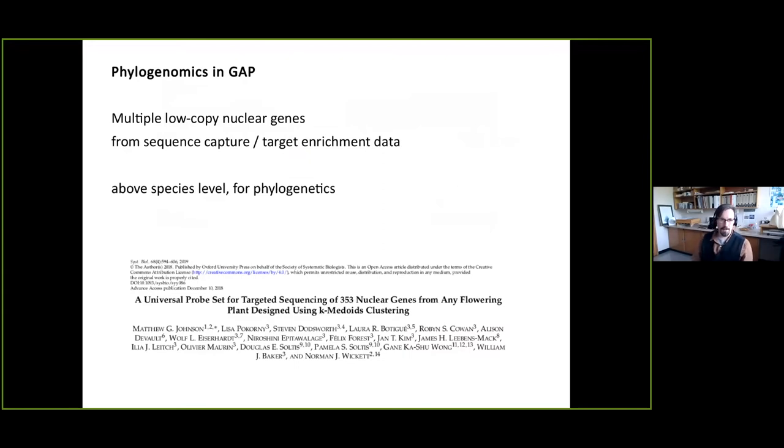The premise here is that either in GAP or in other projects, we are now dealing with large numbers of low copy nuclear genes. In the case of the Australian angiosperm tree of life produced with sequence capture, also known as target enrichment. And the premise is also that we have got sampling with fairly one per genus or one per species coverage. So the kind of problem that is really phylogenetic, pretty much above species level.